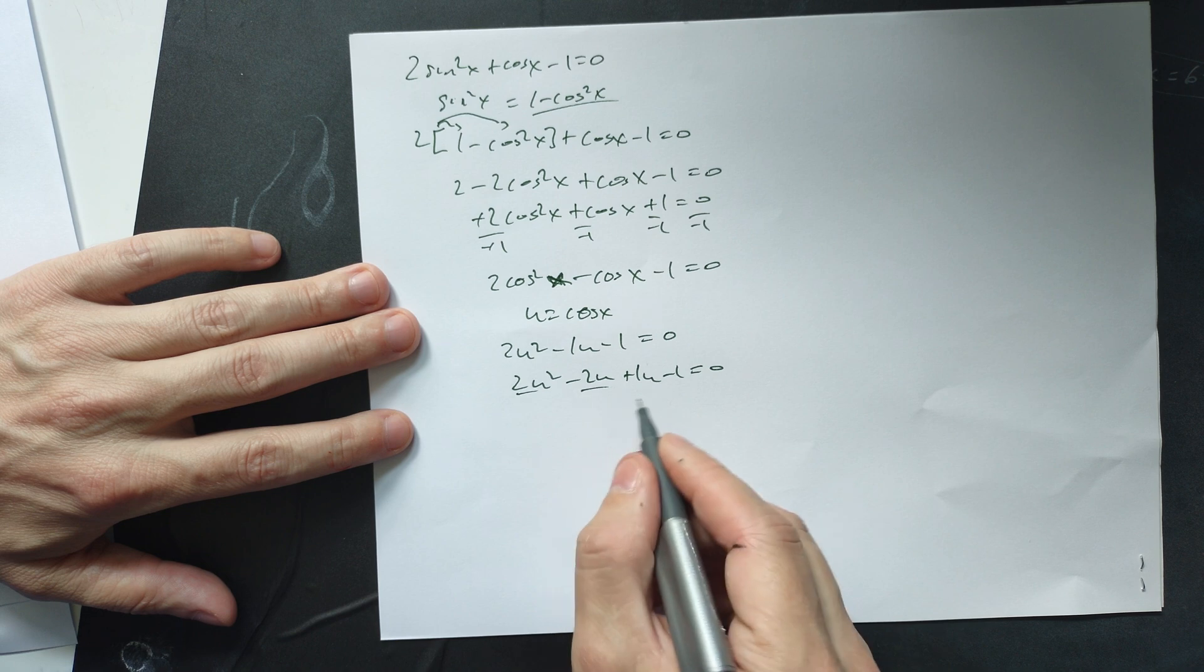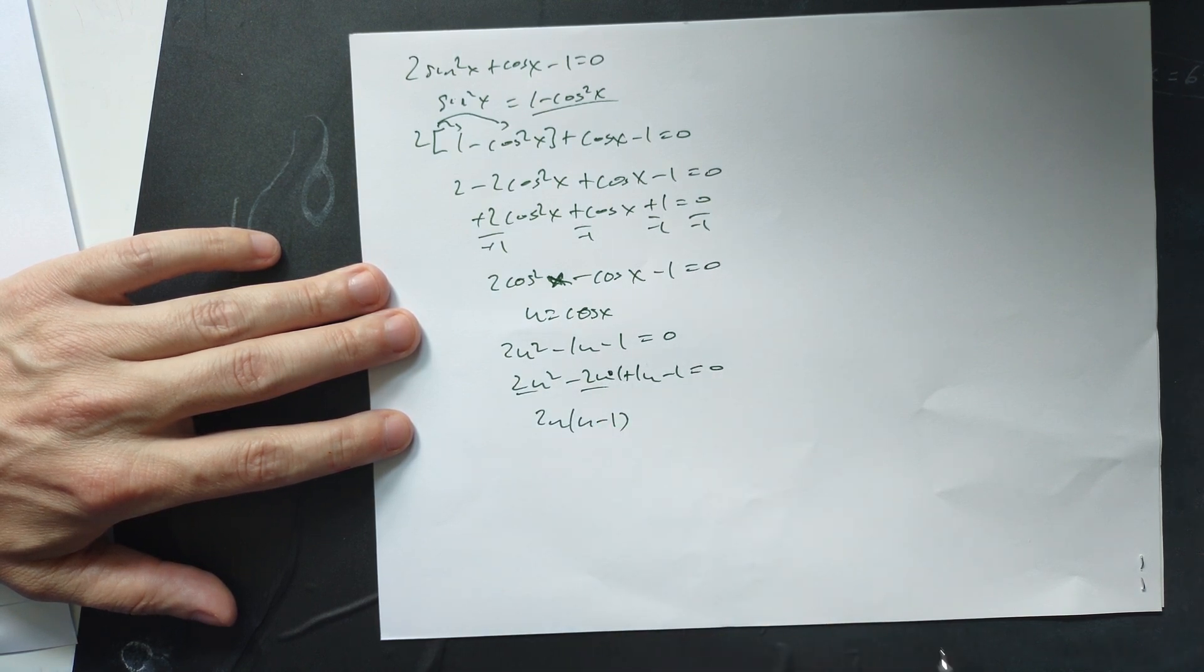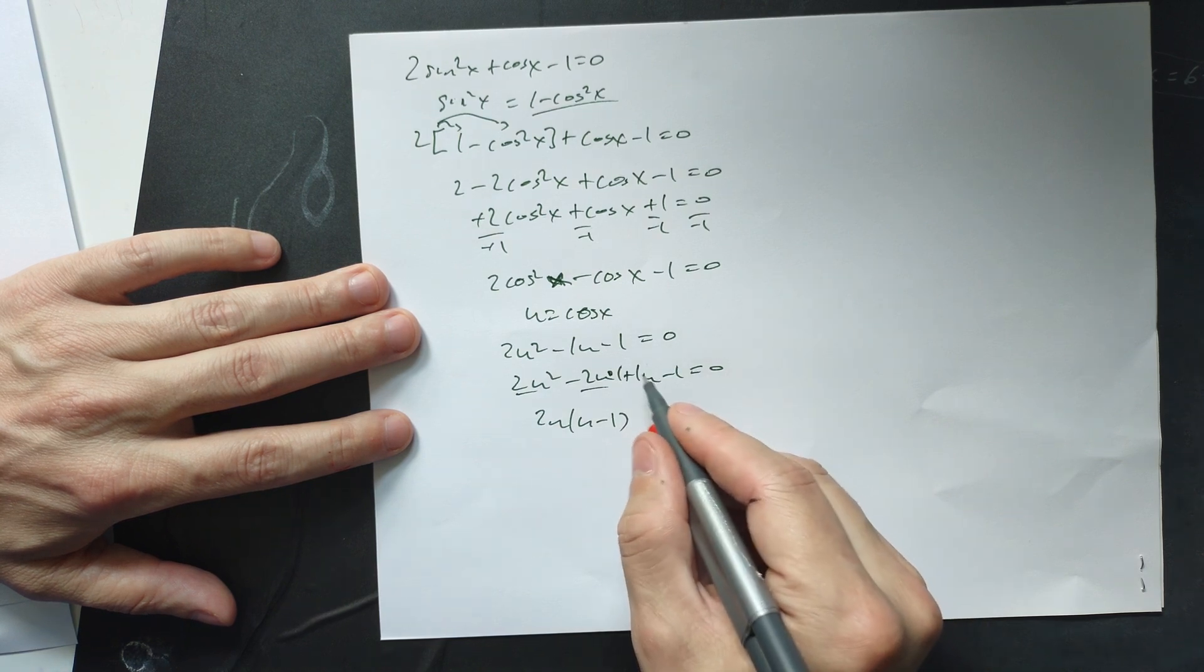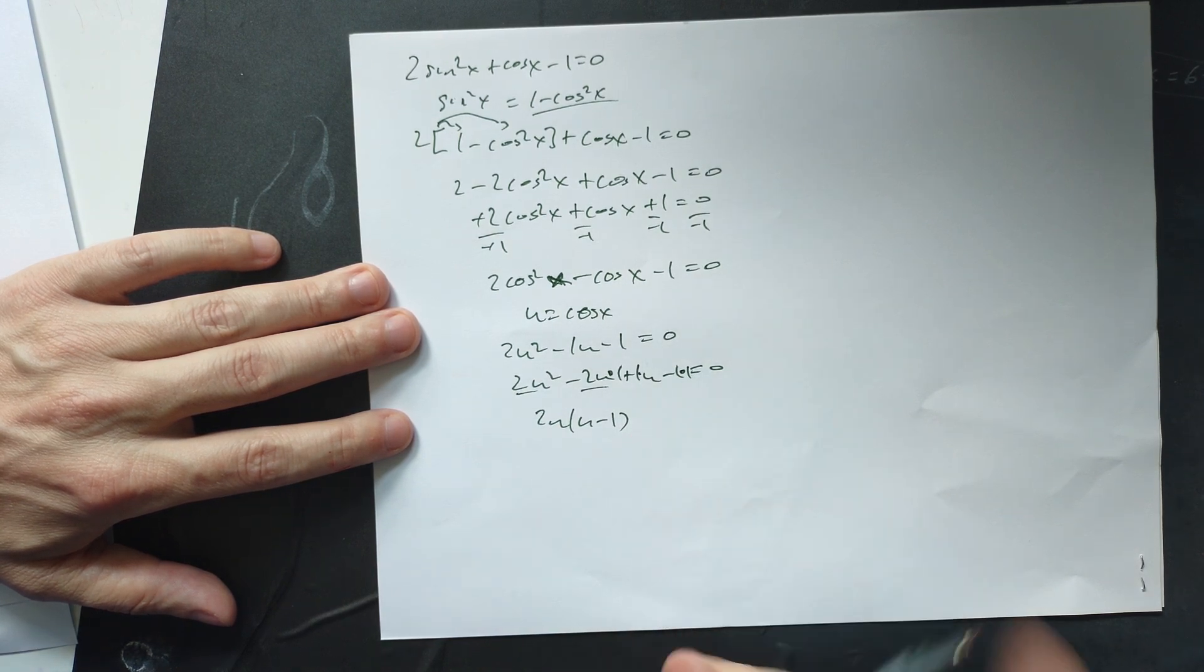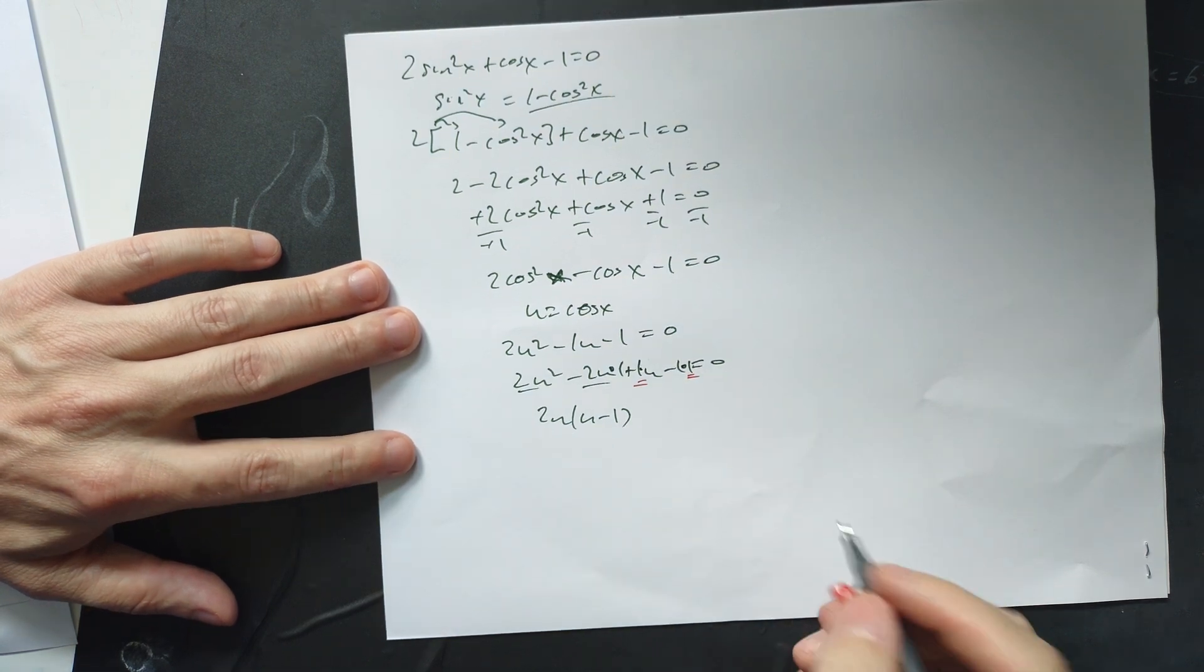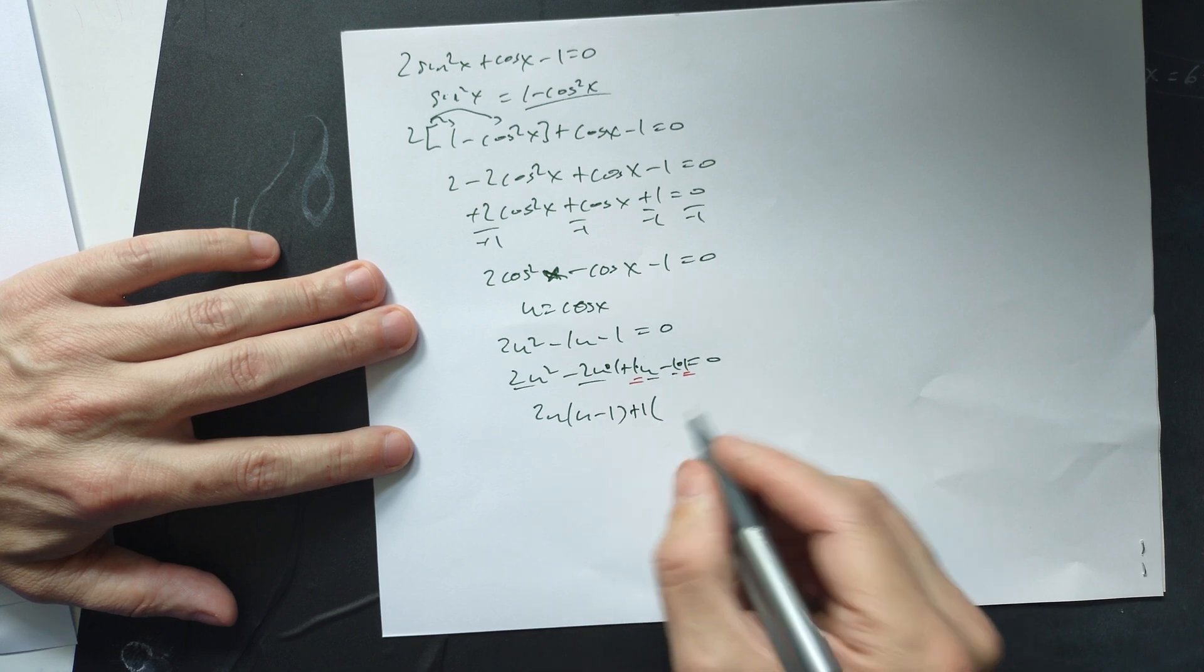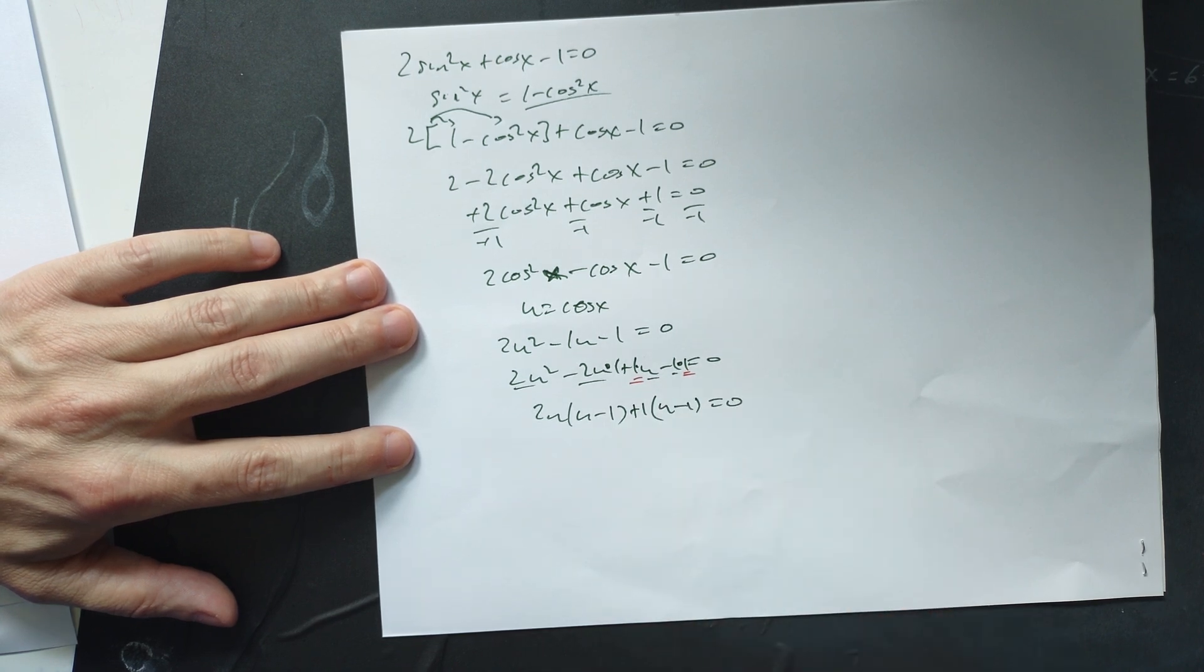But then you can factor from these two 2u, leaving u minus 1 because remember it's 2u times 1 right there really. From these other two it's like 1 times u minus 1 times positive 1. So there's a 1 here and a positive 1 right there. So you factor the positive 1 out. What's left over is then the remaining part, u minus 1. So u minus 1, this is equal to 0 right there.